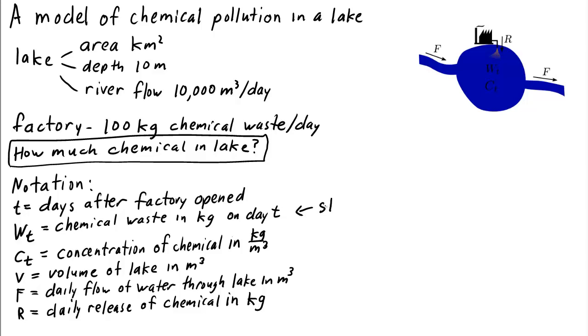Wt is our state variable. We added the variable c sub t just for convenience. The concentration c sub t is just the amount of waste divided by the volume. So really we didn't need to put c sub t in there, but using c sub t will just make our derivation a little simpler.